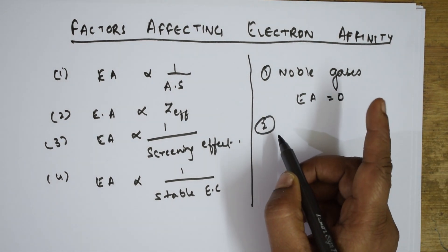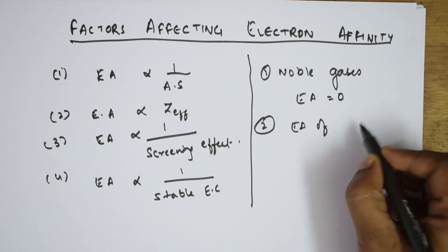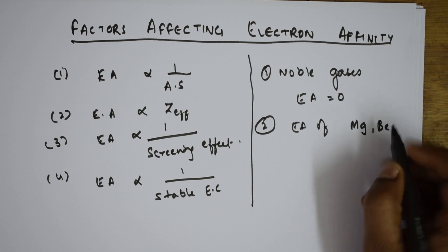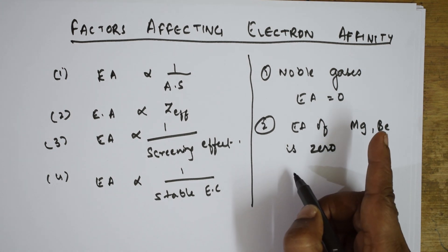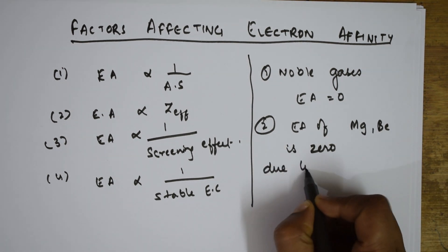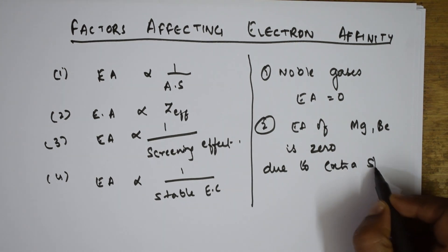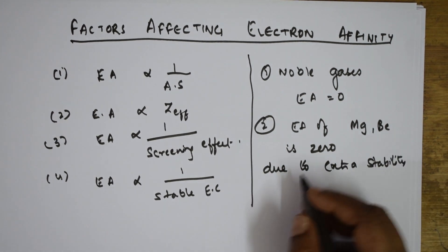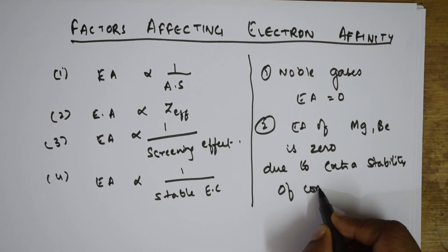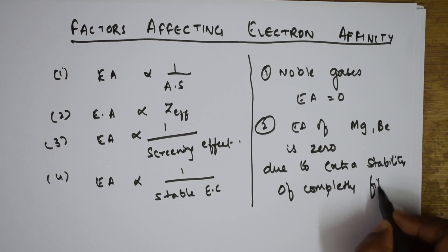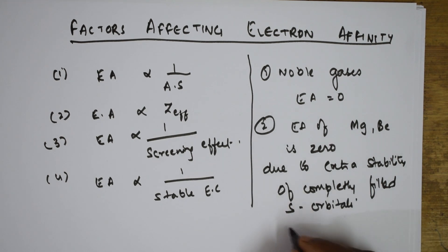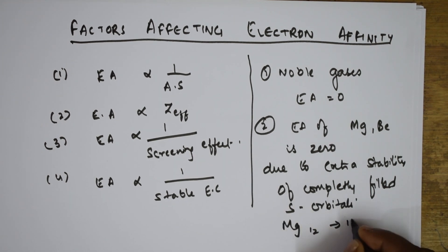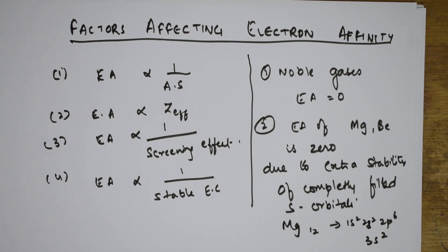Second: the electron affinity value of magnesium and beryllium is practically 0. Why? Because of the extra stability of the completely filled s orbital. If I take magnesium (atomic number 12): 1s2, 2s2, 2p6, 3s2 — completely filled. That's the concept.